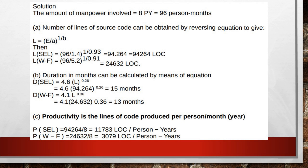The third question is to identify productivity in lines of code produced per person-year. Productivity equals total lines of code divided by person-years. For SEL: 94,264 ÷ 8 = 11,783 lines of code per person per year — meaning each person writes 11,783 lines per year. For Watson-Felix: 24,632 ÷ 8 = 3,079 lines of code per person per year.